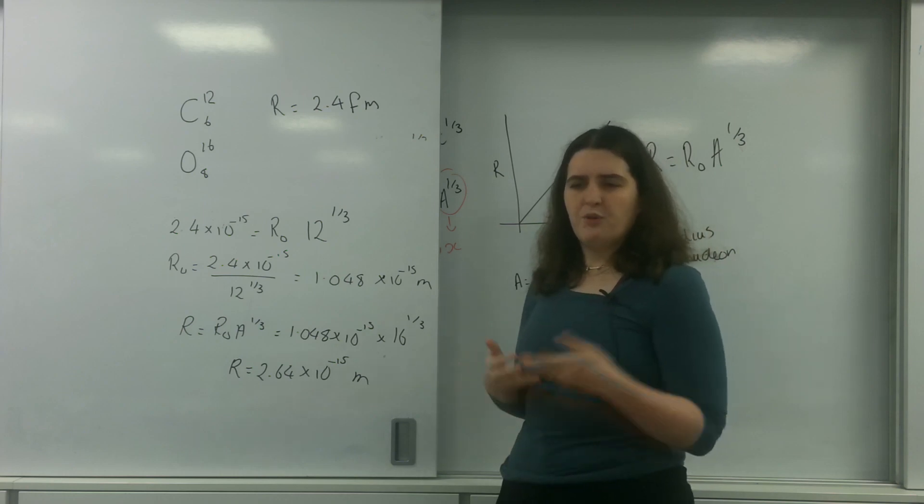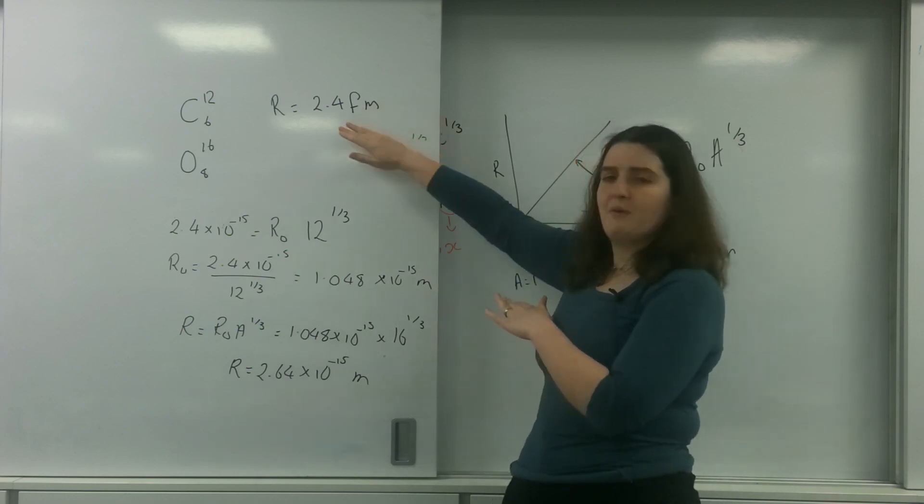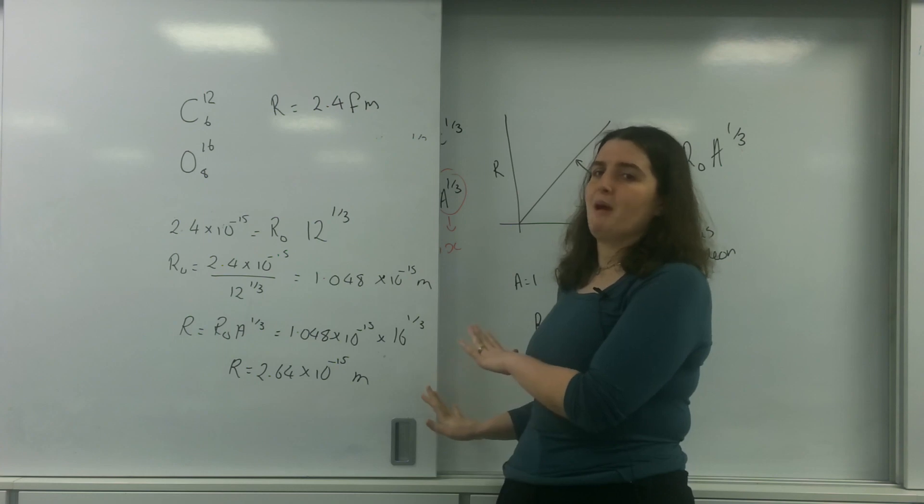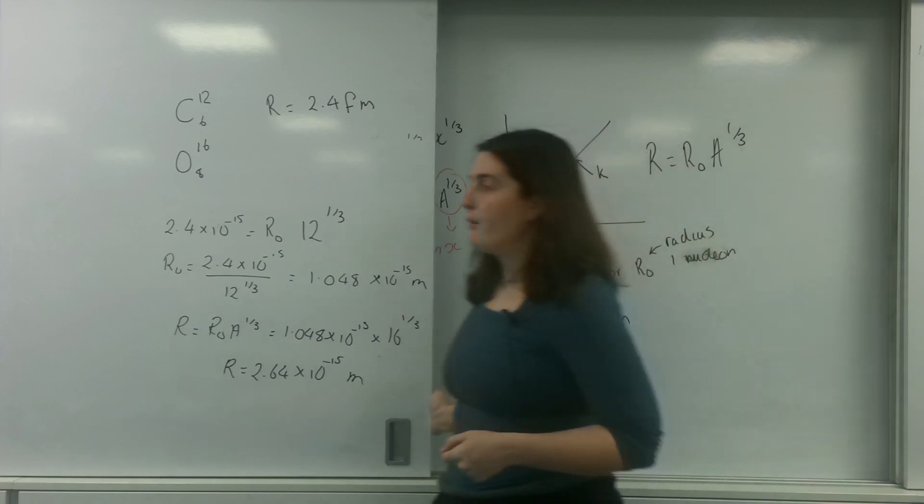And this is what the examiner may do for a one mark question. They give you some information about one and ask you to find the information about another. So finding r naught is extraordinarily powerful.